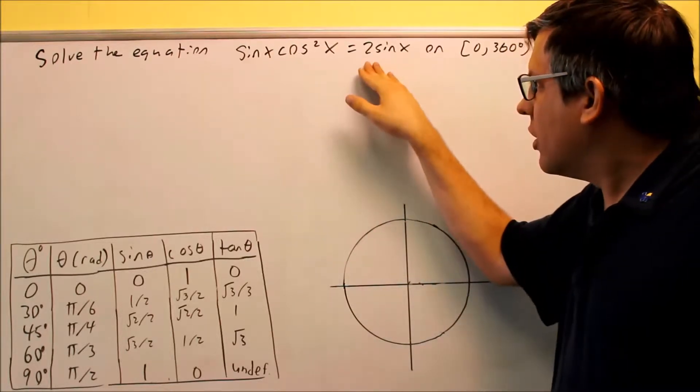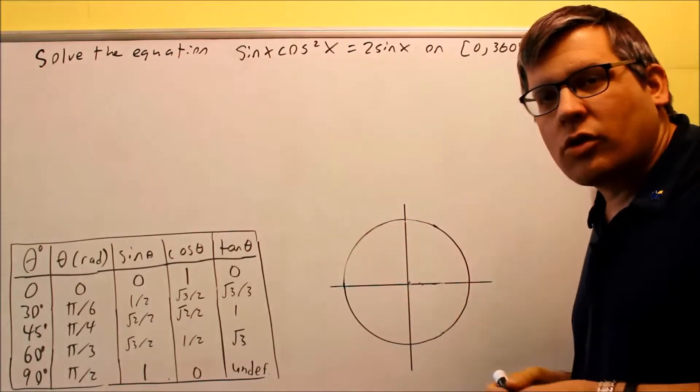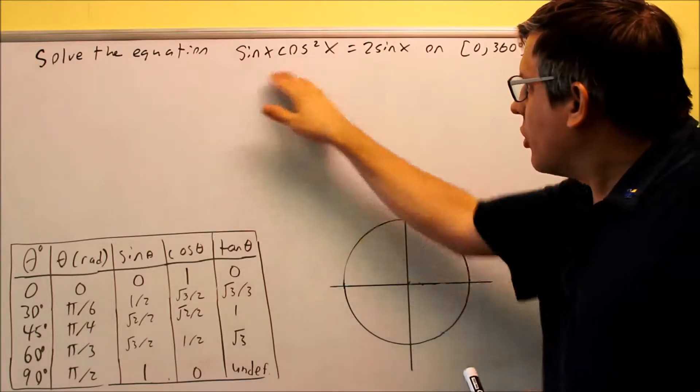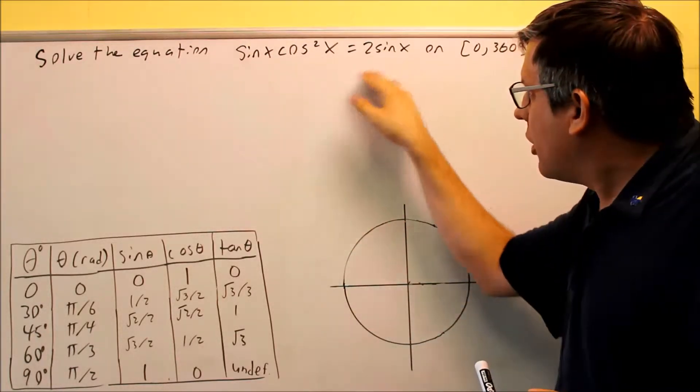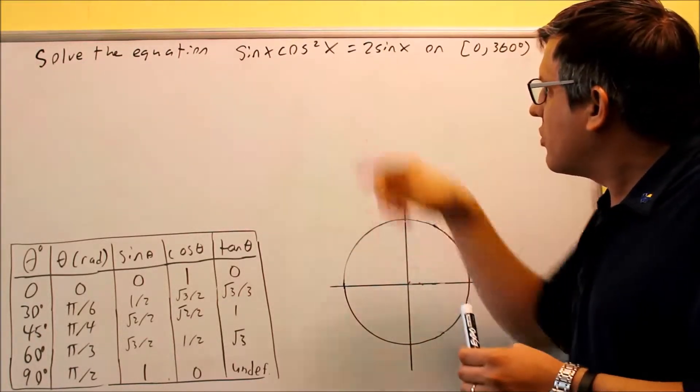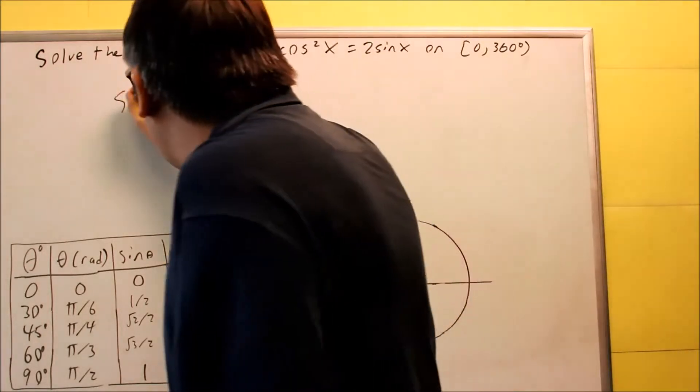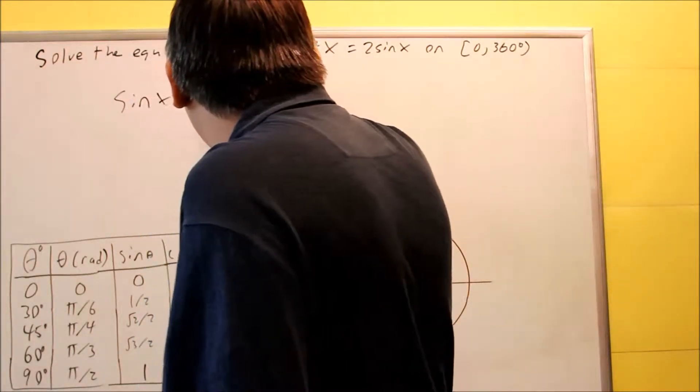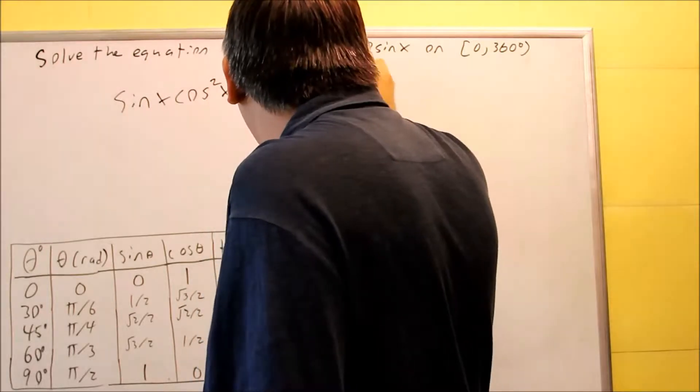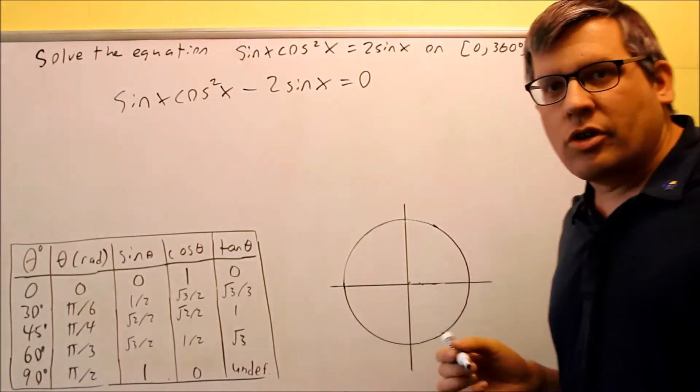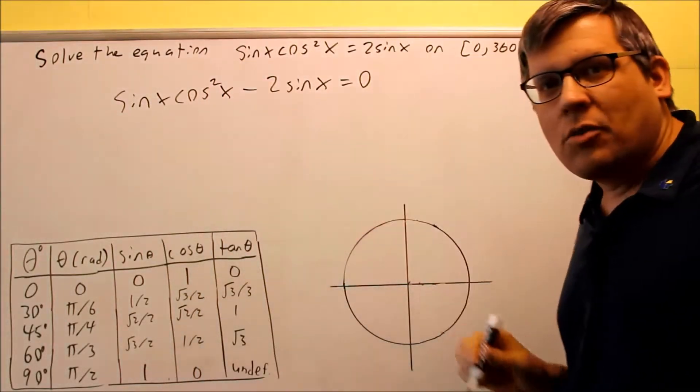So the first thing I want to do here is move the 2 sine x over to the other side. It doesn't really matter which side I work with here, but in this case I'm just going to bring the 2 sine over to the left-hand side. So I get sine x cosine squared x minus 2 sine x. That's going to equal zero. So now I've done the first step.